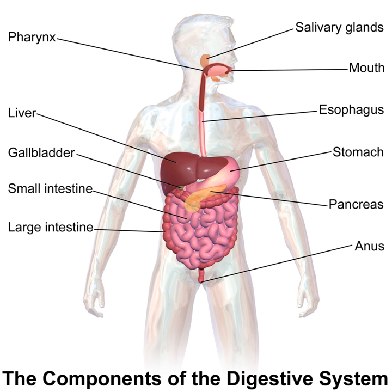When the pyloric sphincter valve opens, chyme enters the duodenum where it mixes with digestive enzymes from the pancreas and bile juice from the liver, and then passes through the small intestine, in which digestion continues. When the chyme is fully digested, it is absorbed into the blood. 95% of absorption of nutrients occurs in the small intestine. Water and minerals are reabsorbed back into the blood in the colon (large intestine) where the pH is slightly acidic, about 5.6 to 6.9.